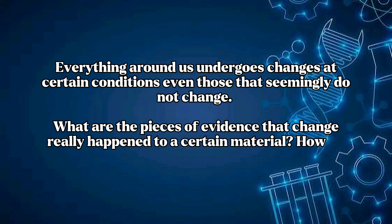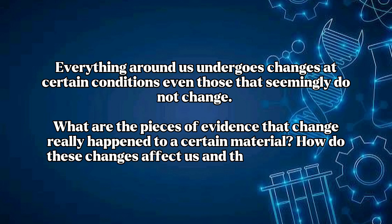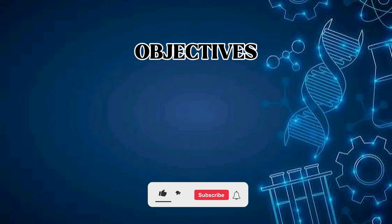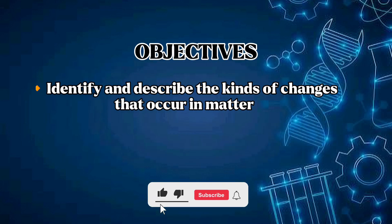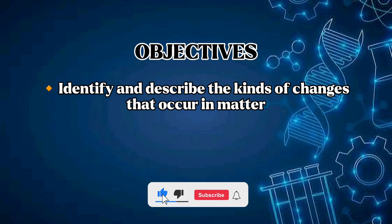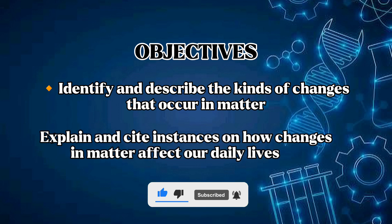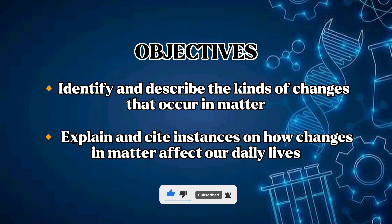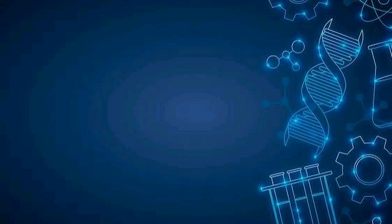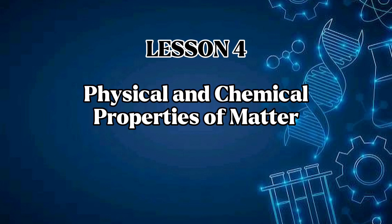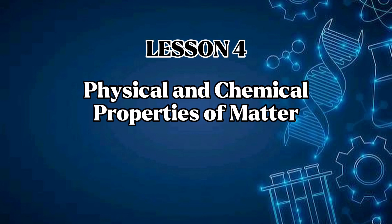What are the pieces of evidence that change really happened to a certain material? How do these changes affect us and the environment? Objectives: identify and describe the kinds of changes that occur in matter; explain and cite instances on how changes in matter affect our daily lives. Lesson 4: Physical and Chemical Properties of Matter.